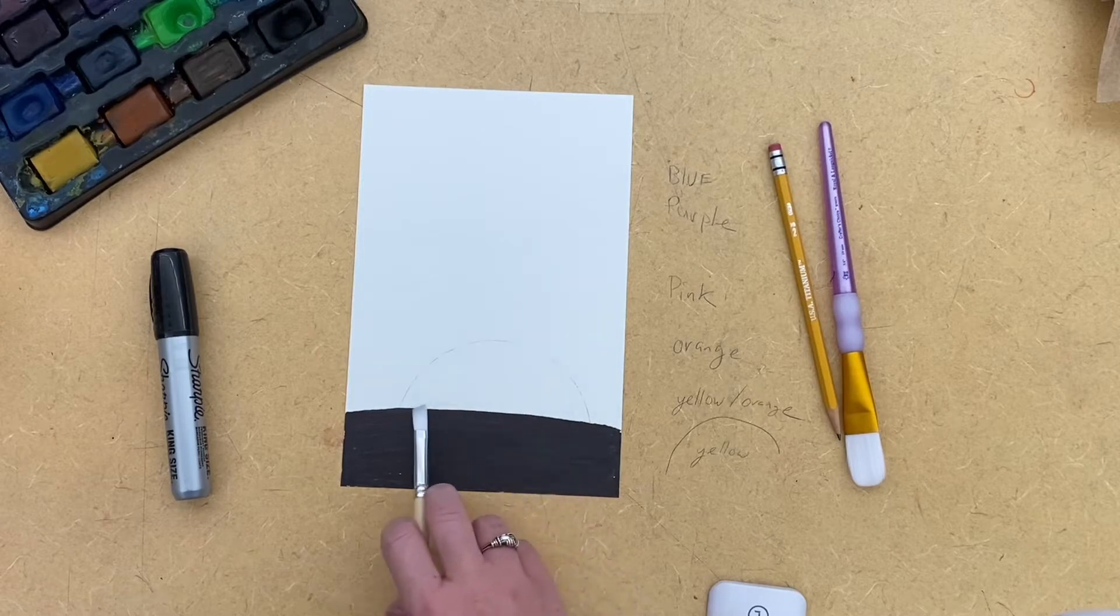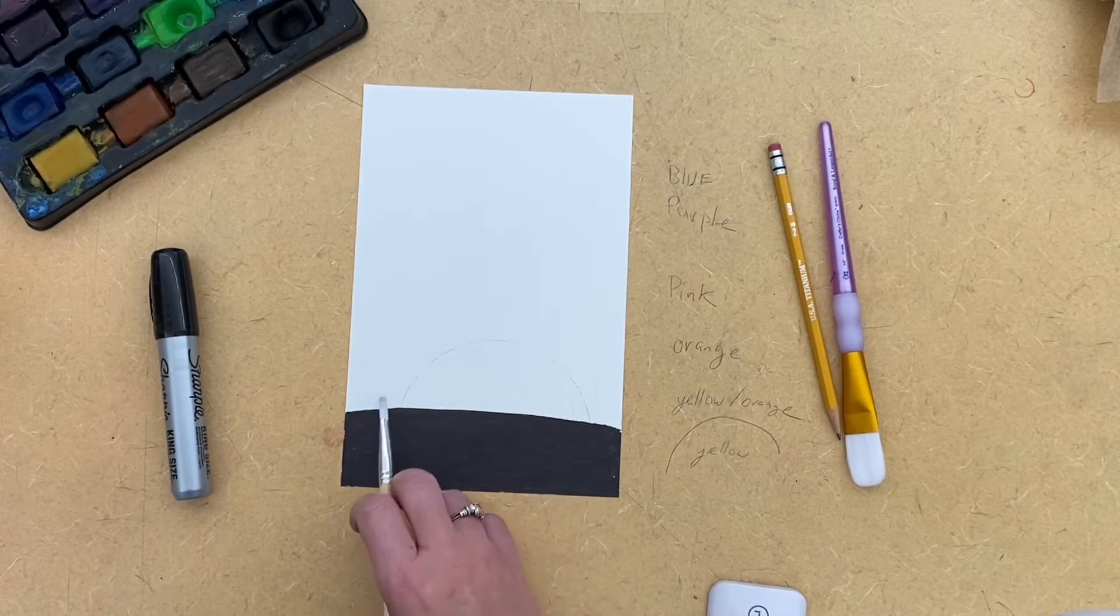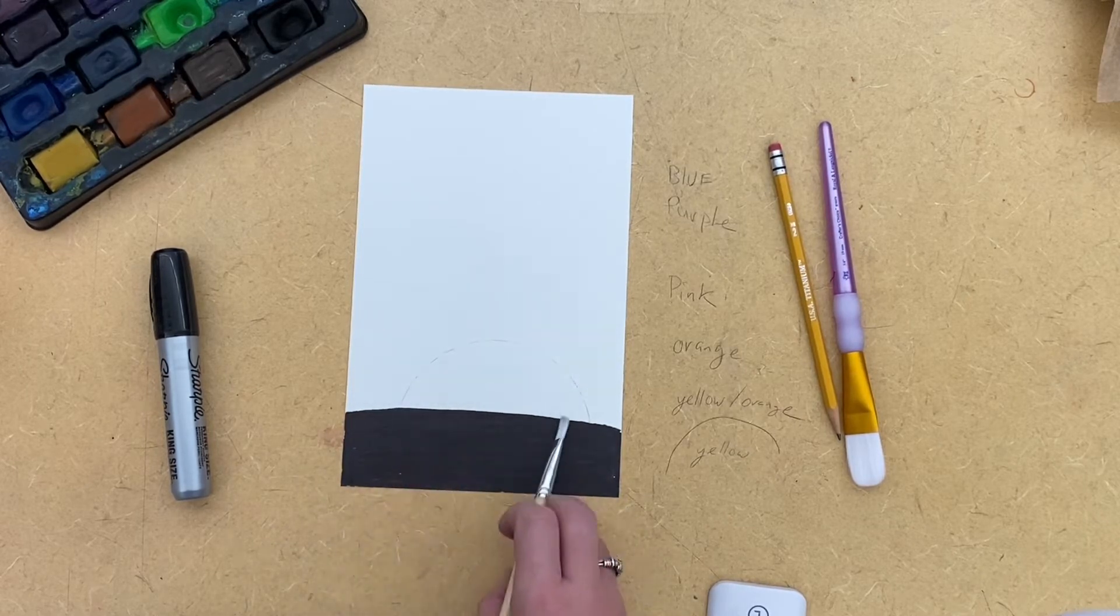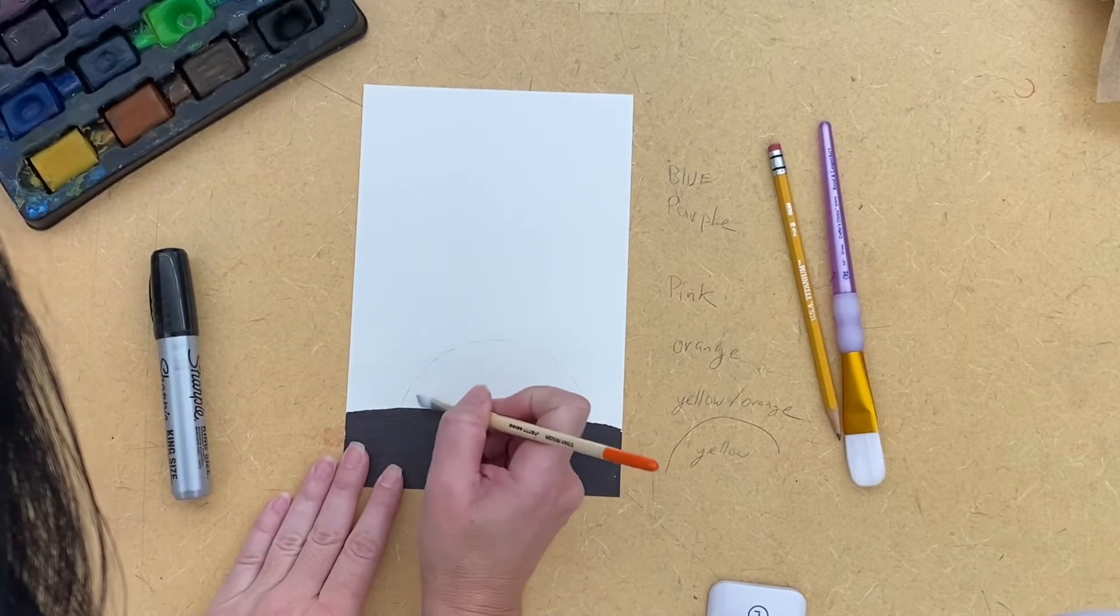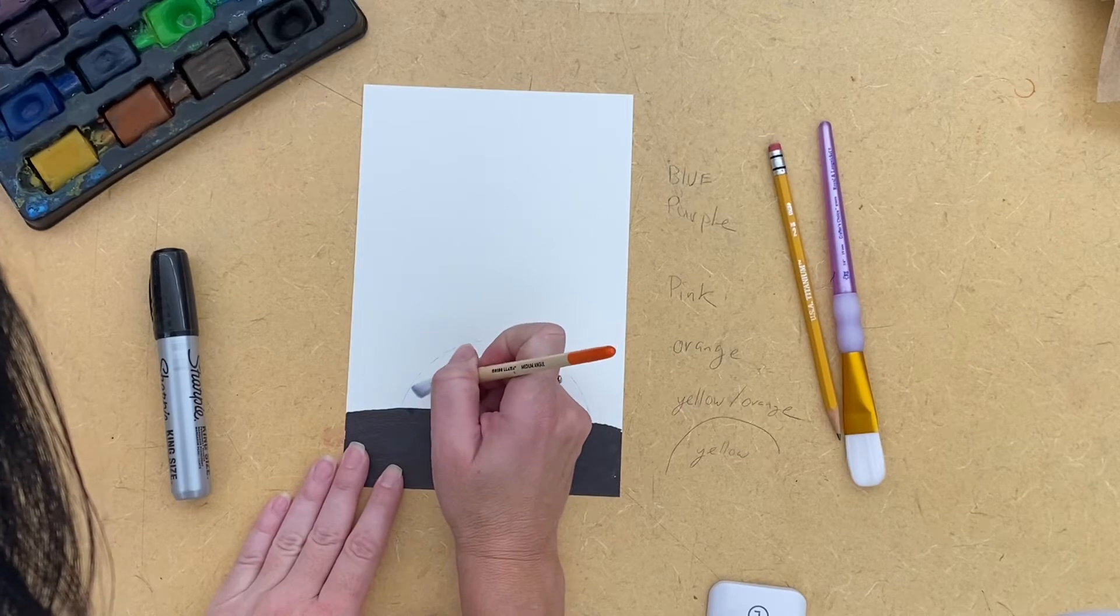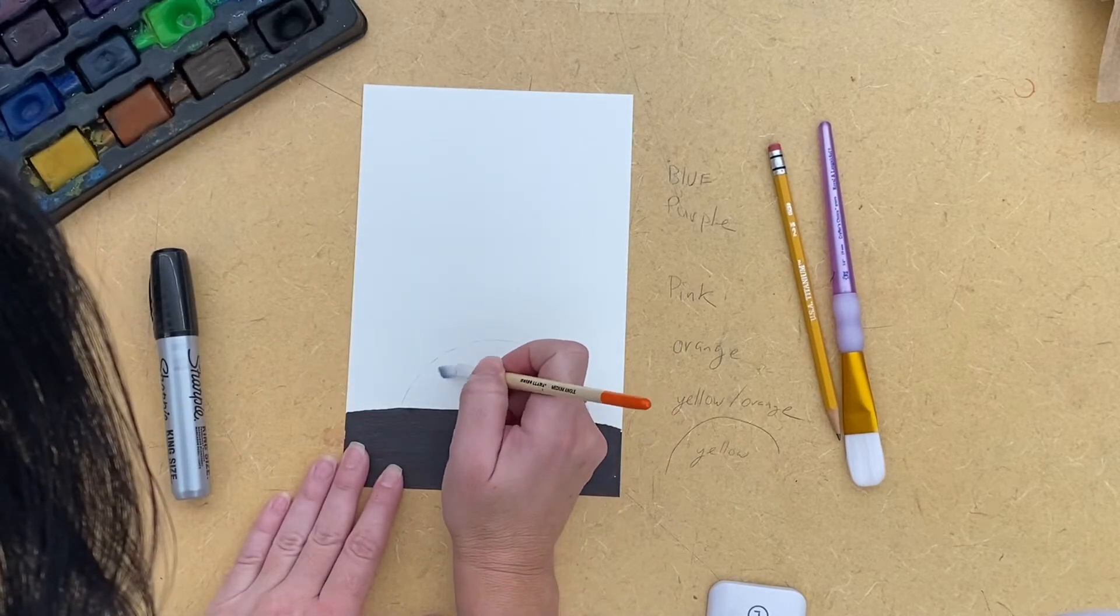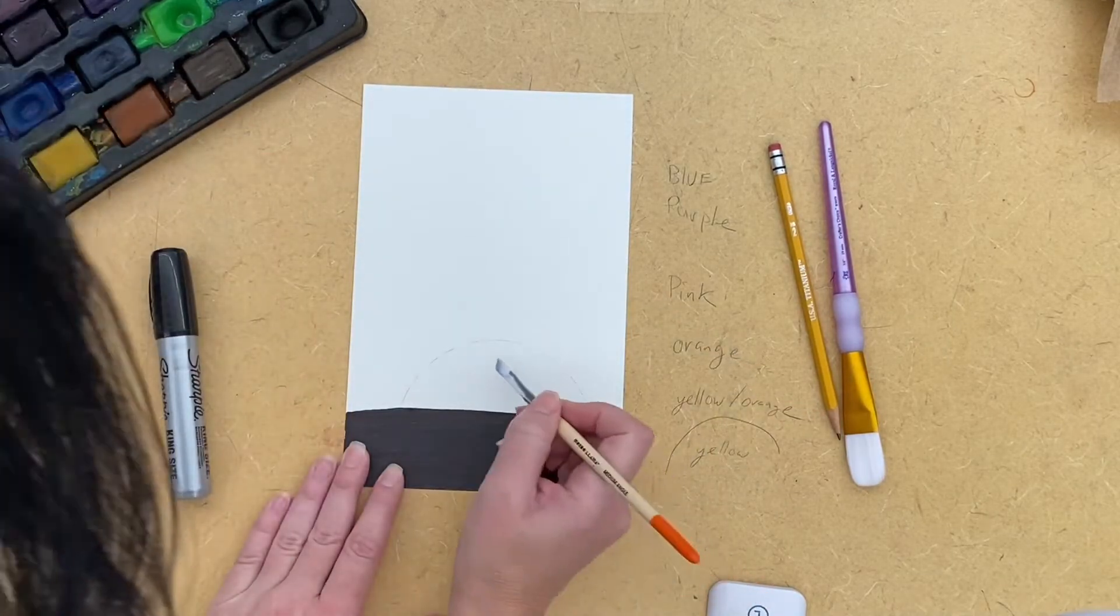I'm going to go blow-dry it so that way my sun is dry because if I put yellow here and then put yellow-orange here, it's all going to blend together. So I want this to dry first. So always add paint. I'm going to be very careful when I'm doing the sun because I do not want that yellow to go outside the line of the sun.